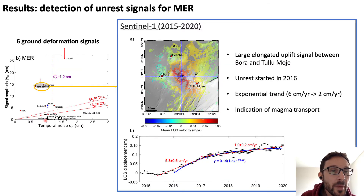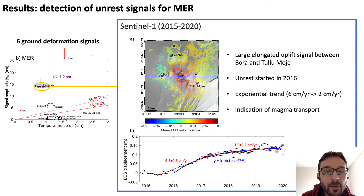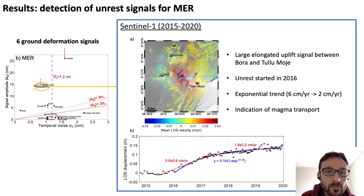Moving on to the Main Ethiopian Rift, we also see six ground deformation signals. One of them is Tulumoye — an elongated signal between Tulumoye, Berisha, and Bora. The unrest started around 2016, with a high rate of about six centimeters per year before decaying to about two centimeters per year in late 2019. This exponential decay is an indication of magma transport between a deep and shallow source.